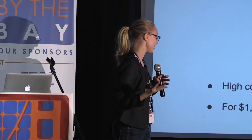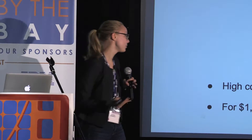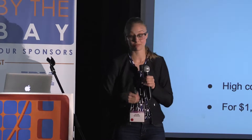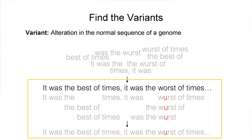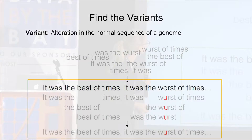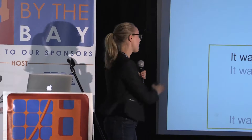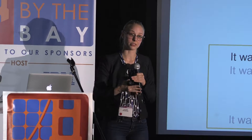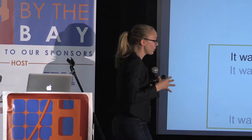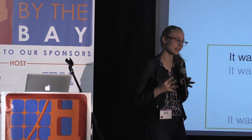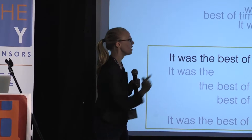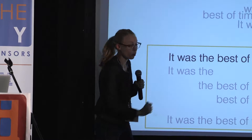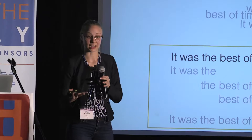Today, for only about $1,000, we can sequence a 30x coverage copy of your genome. After aligning our data to the reference genome, the next step is to find the variance. In our example, over on 'worst,' we have a variant from an O to a U, and because it happens four times with very high probability, that is actually a variant.